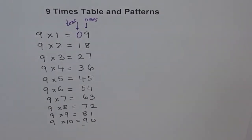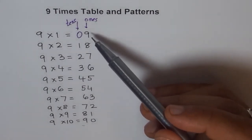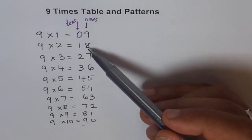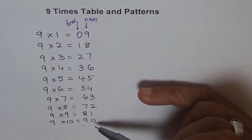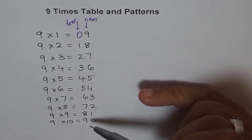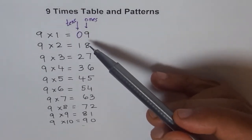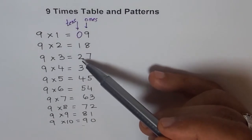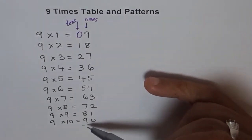So 9's times table is so easy. In the ones place you have backward counting: 9, 8, 7, 6, 5, 4, 3, 2, 1, 0. And in the tens place it is straightforward counting: 0, 1, 2, 3, 4, 5, 6, 7, 8, 9.